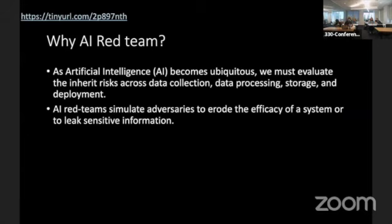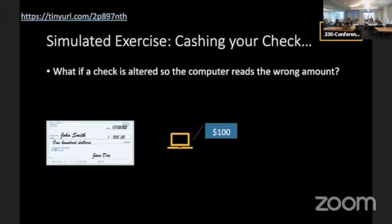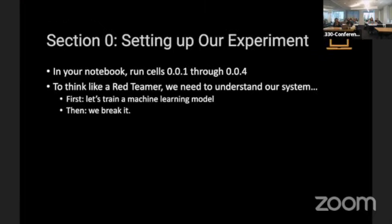Why do we do this? Obviously we know that AI machine learning is getting very popular, very ubiquitous. You're going to use it in your spam filter, in your email, like when you're using Snapchat to edit your face. It's everywhere. So we need to understand what are the inherent risks in the data collection, processing of that data, storing of that data, and how it's being deployed. This is the example I want you to keep in mind for a little exercise. Say you're cashing your check with a mobile picture of a check and it'll get deposited into a fake account. This is a computer vision system. We're trying to get the computer to read the wrong amount.